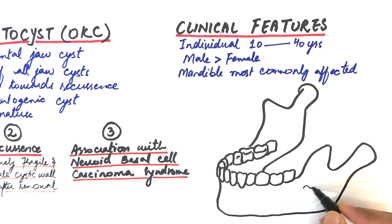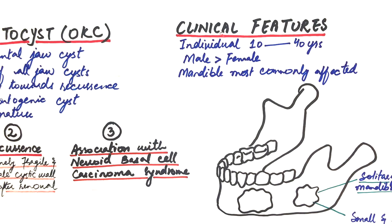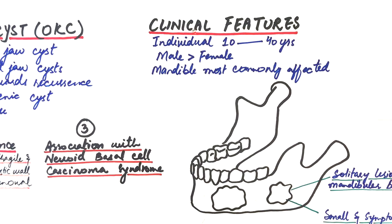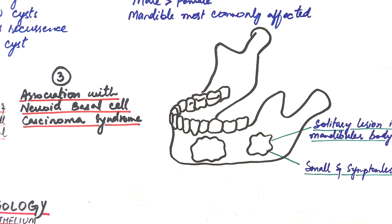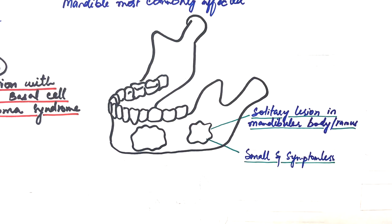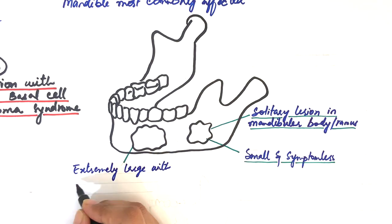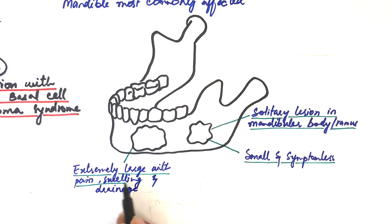The cyst usually presents as a solitary lesion affecting most often the body and ramus of the mandible. The cyst varies in size. It's either so small and symptomless that it goes unnoticed, or it may present with extremely large size with symptoms of pain, swelling, and drainage.